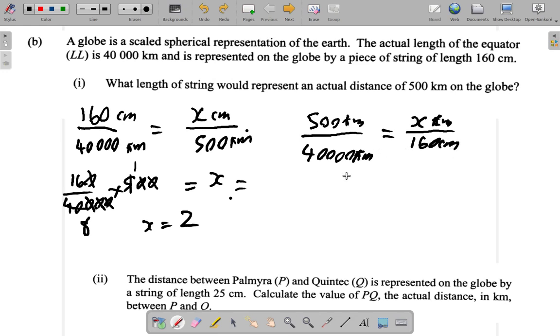How would that work out? The same thing. X is equal to, multiply both sides by 160, it's 500 over 40,000 times 160. Let me erase this thing here. 10 into this, 10 into this. Let's cancel. 10 into this, 10 into this. 5 into 5, 1. 5 into 40, 16 over 8 is 2.